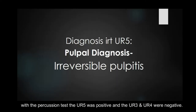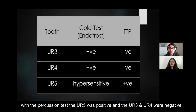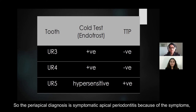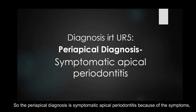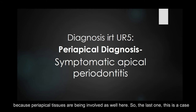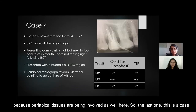With the percussion test, upper right 5 was positive while upper right 3 and 4 were negative. So the periapical diagnosis is symptomatic apical periodontitis, because of the symptoms and because the periapical tissues have been involved.